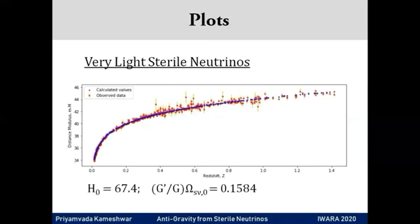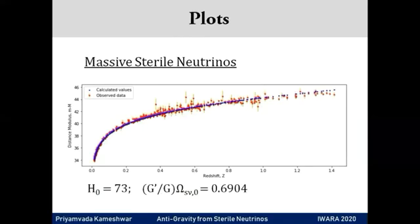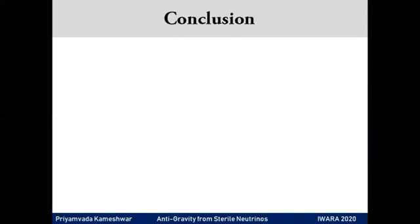I have given a couple of plots here. The blue dots are the values calculated using our model. The red ones with error bars are from the catalogue. We see that the curves fit very well for both the extremes of H0 values and in both light as well as massive sterile neutrino cases.